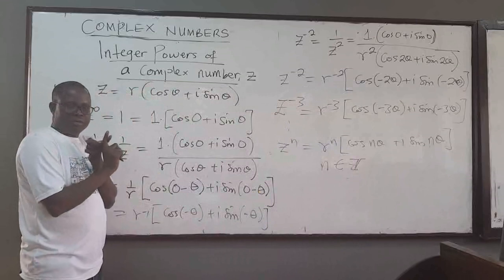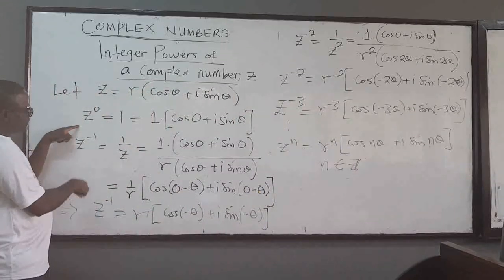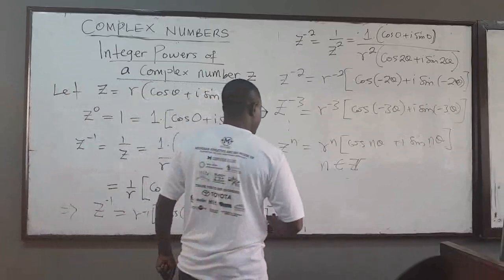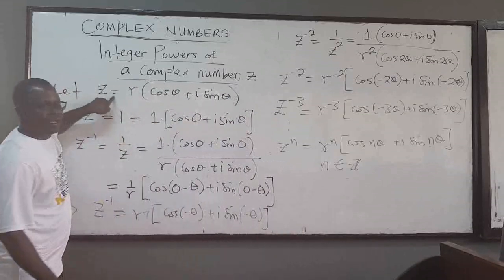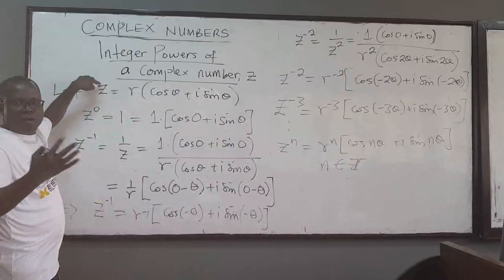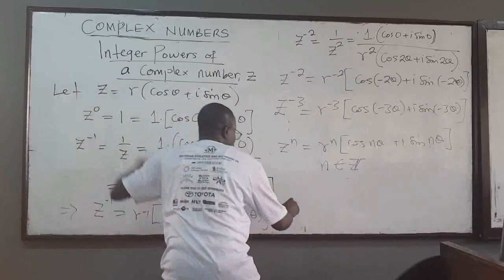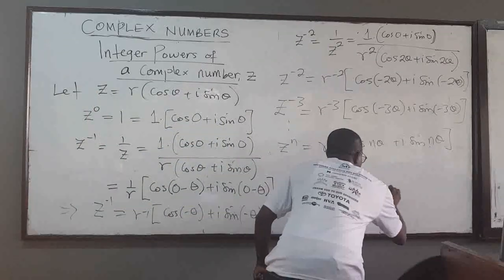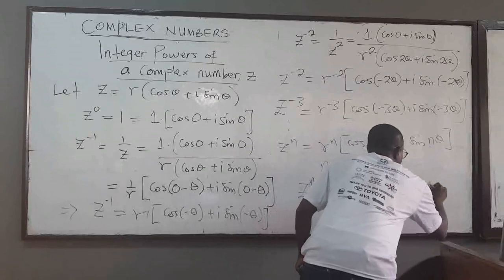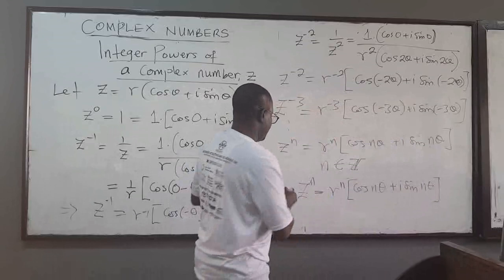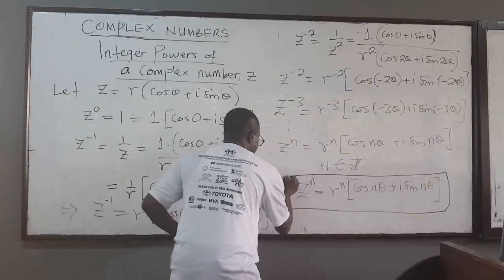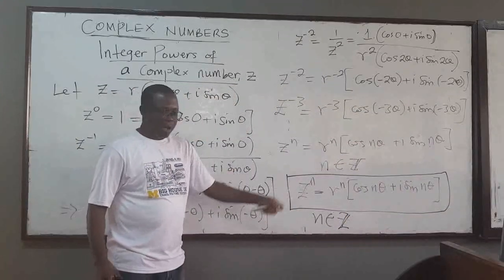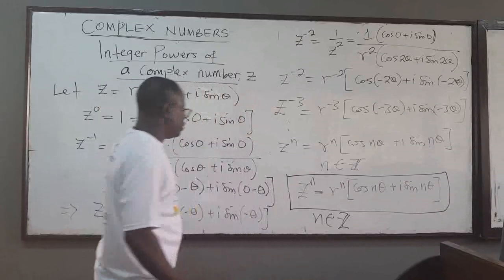We've done it for positive integers, for negative integers, and for zero. Therefore, generally, we have the relationship: for any integer n — positive or negative — z^n = r^n(cos nθ + i sin nθ). This is a powerful result, and we'll be using it to do some examples.